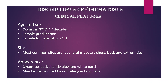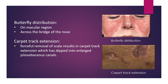Appearance: circumscribed, slightly elevated white patch that may be surrounded by a red telangiectatic halo. Butterfly distribution on the macular region and across the bridge of the nose. Forceful removal of scale results in carpet-tack extension, which has dipped into enlarged pilosebaceous canals.